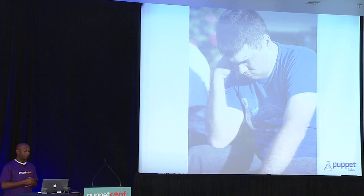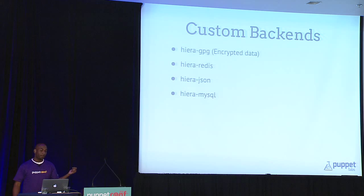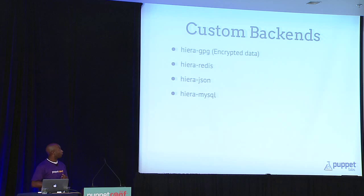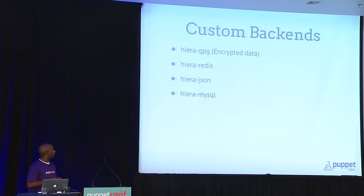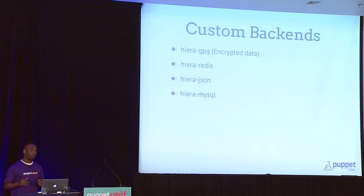There are other backends beyond YAML. HieraGPG is an awesome backend — if you want to encrypt some data, Hiera can decrypt it at lookup time, relying on GPG. There's HieraRedis — I think everyone in here has probably written a HieraRedis backend. There's HieraJSON, so if YAML's not your thing you can use JSON. And there's a Hiera MySQL backend. You can find these on GitHub, drop them in place. Some have good documentation on what parameters you need to configure — for MySQL you need username, password, and what database to connect to.